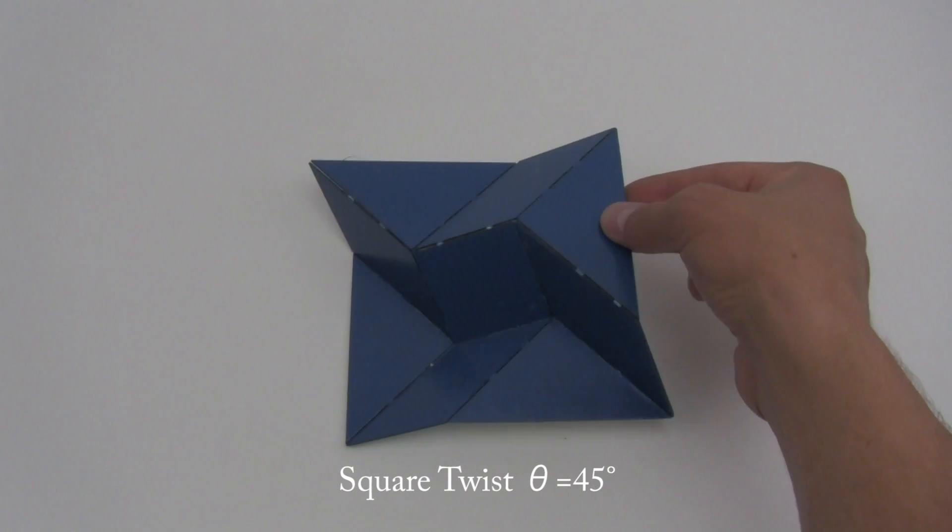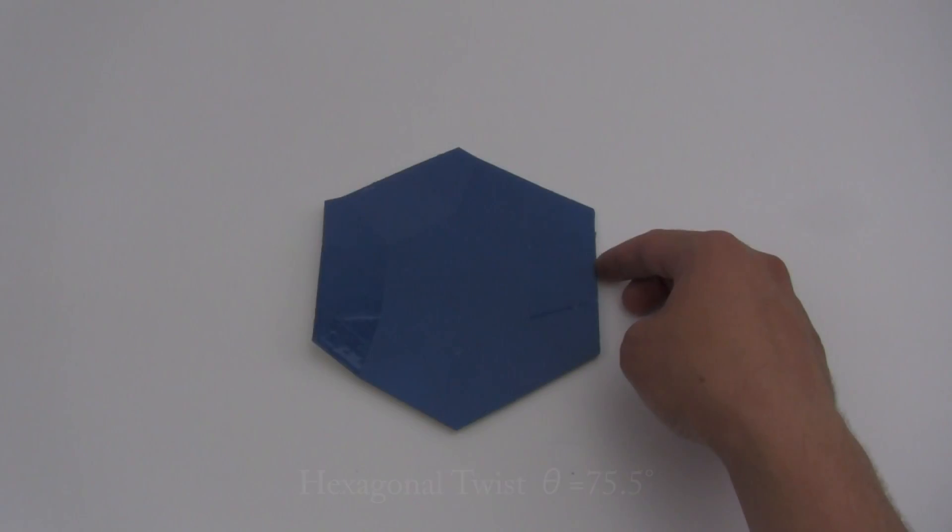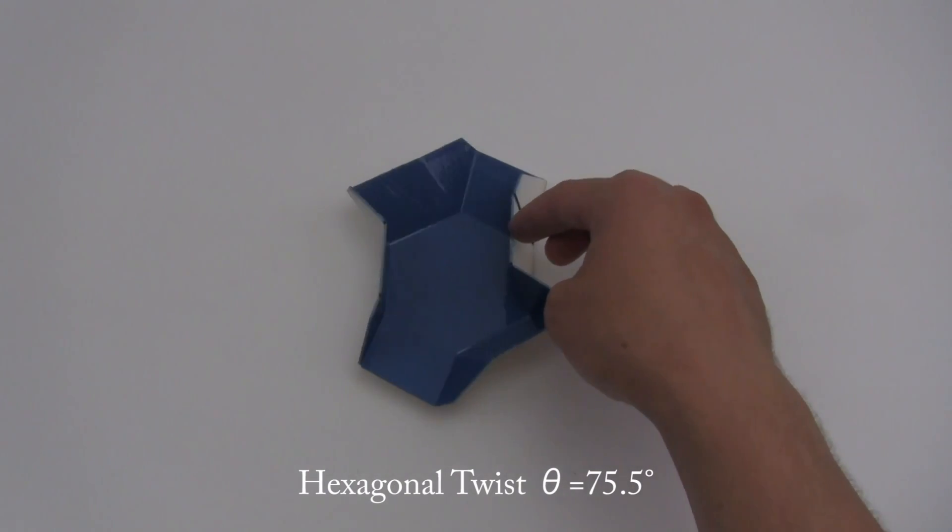A rigidly foldable origami twist would be an origami twist where all of the creases can occur without any deflection of the panels.